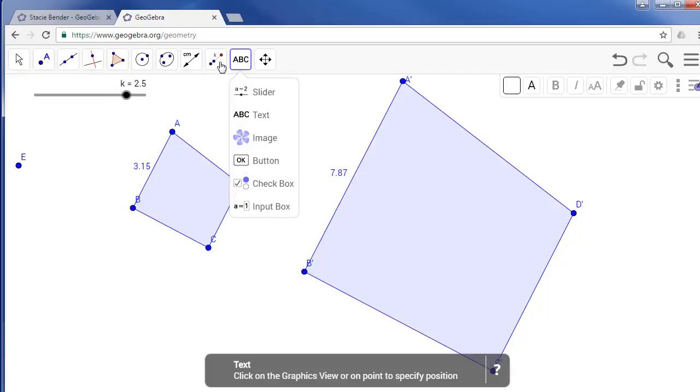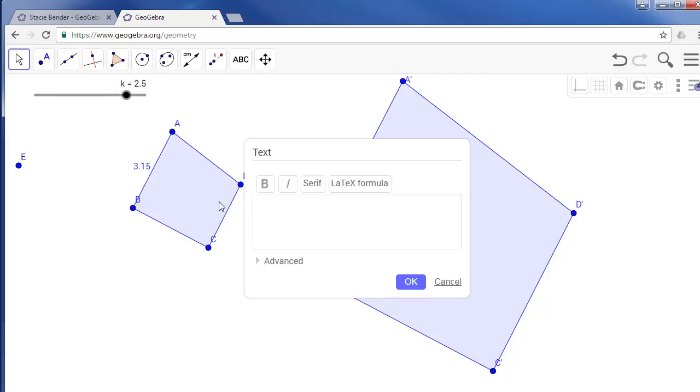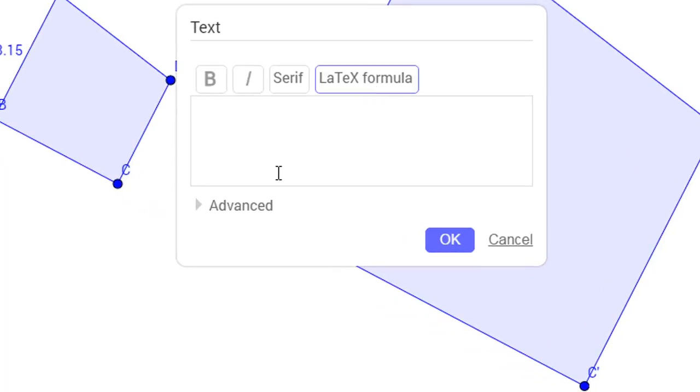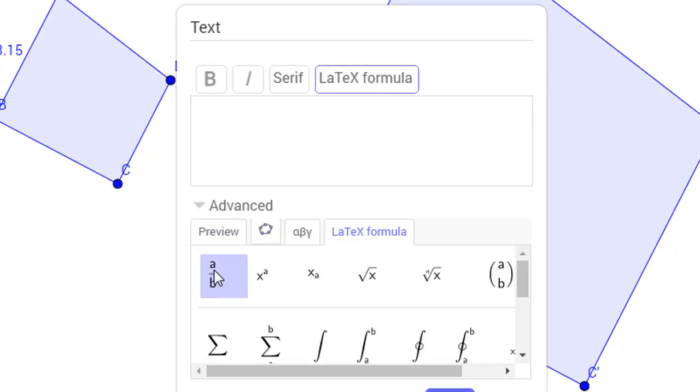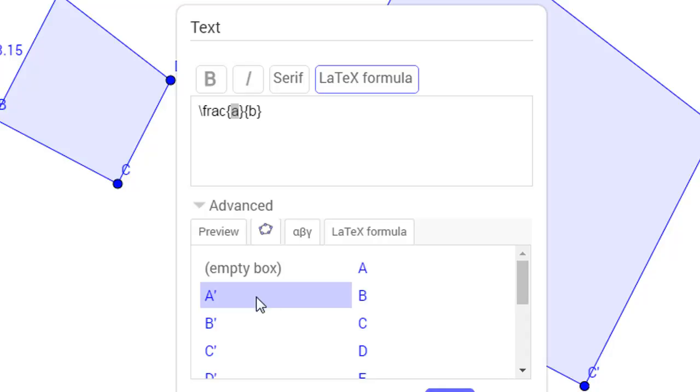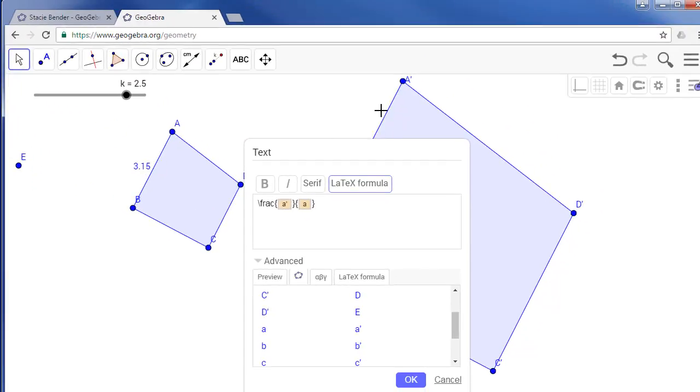To do that, we'll grab the text tool and we'll create text and we want to use the LaTeX formula. So under advanced we can choose LaTeX and say I want a fraction and in place of the A we want to put segment A prime. And we do that by grabbing the GeoGebra tab and choosing side A prime and then in place of the letter B we're going to put side A.